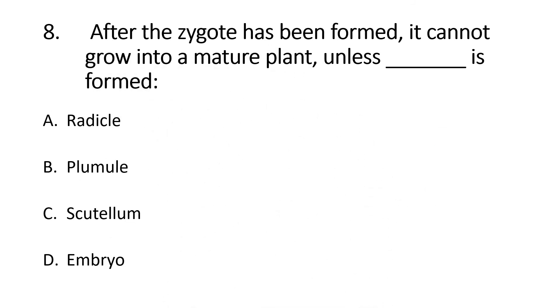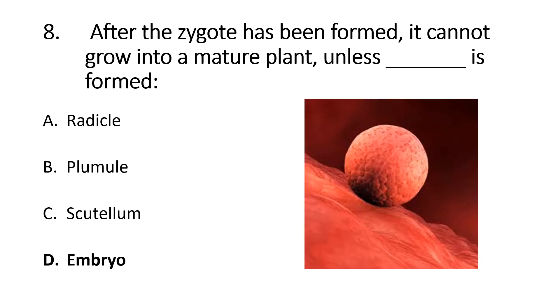After zygote has been formed, it cannot grow into a mature plant unless blank is formed. Zygote forms embryo, and embryo further forms seedling, and seedling becomes a plant. The right answer is beta, embryo. From embryo, first the radicle will emerge, radicle will form root, then plumule will form shoot, and scutellum is basically the cotyledon of monocots and grasses.